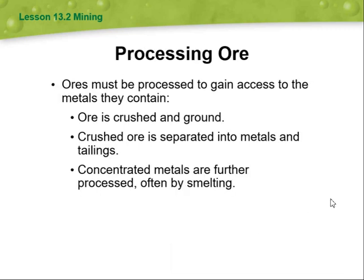We also have processing ore. Ores must be processed to gain access to the metals they contain. The ore is crushed and ground, then crushed ore is separated into metals and tailings. Concentrated metals are further processed, often by smelting.